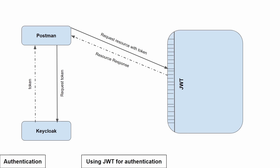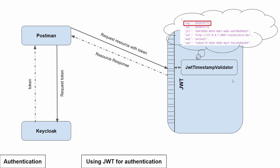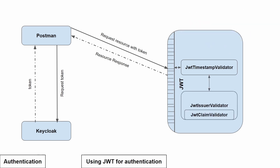What JWT does is validate two things. First, it uses the JwtTimestampValidator class to validate the time sent within the token. Within the access token there is a property called 'exp', whose value is the time in seconds. The JwtTimestampValidator uses the current time and cross-checks it against this 'exp' value to determine whether the access token is expired or still valid. If not valid, an error message is returned.